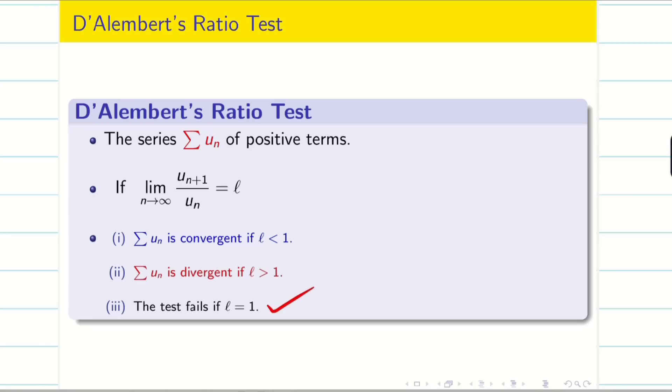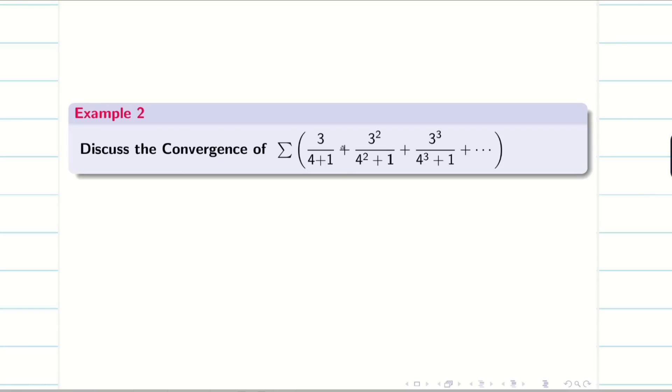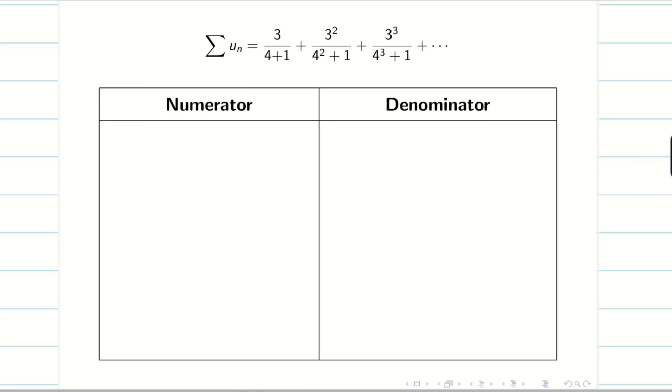Okay, let us go into the problem. Discuss the convergence of summation 3/(4+1), 3²/(4²+1), 3³/(4³+1). See here 3, 4, 3 square, 4 square, 3 cube, 4 cube. That means the power is increasing. So I cannot apply limit comparison test. As usual, let us take summation un and we have to find the nth term. In ratio test, finding nth term is going to be very easy.